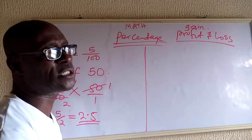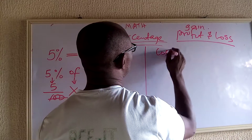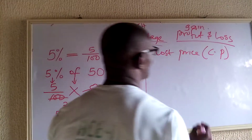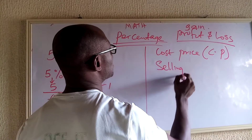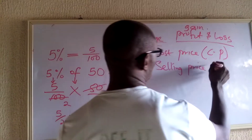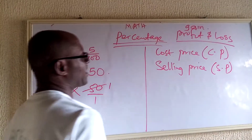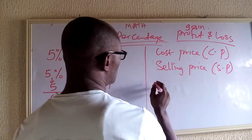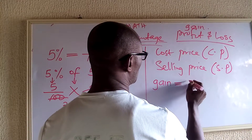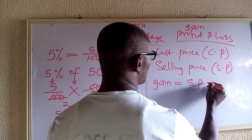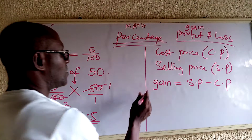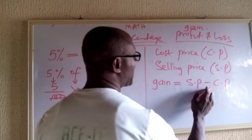And as well with loss. I will be using the short form C.P to represent cost price, and S.P for selling price. Gain is equal to selling price minus cost price — take note of that. Gain is equal to selling price minus cost price, expressed in whatever currency the question uses.